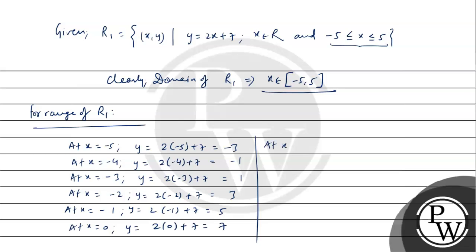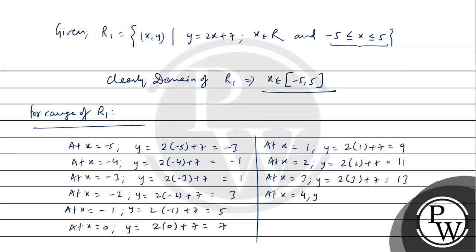At x = 1, y = 2(1) + 7 = 9. At x = 2, y = 2(2) + 7 = 4 + 7 = 11. At x = 3, y = 2(3) + 7 = 6 + 7 = 13. At x = 4, y = 2(4) + 7 = 8 + 7 = 15. At x = 5, y = 2(5) + 7 = 10 + 7 = 17.